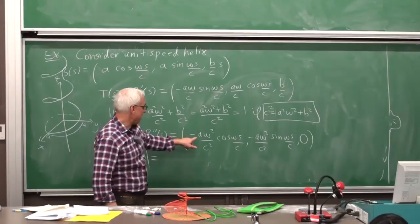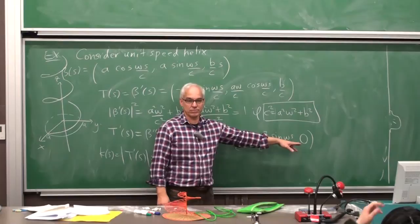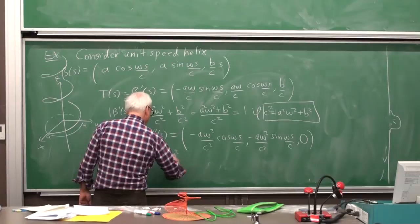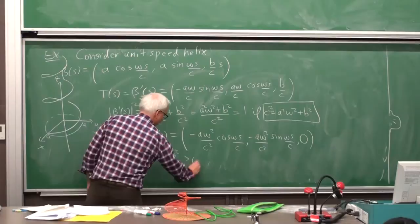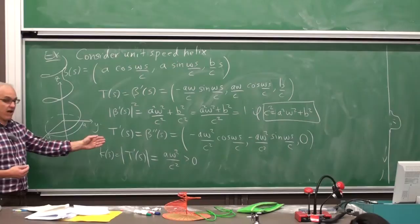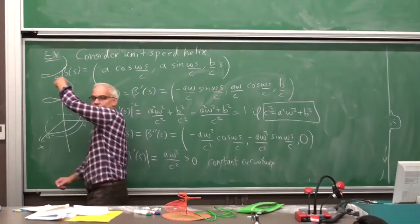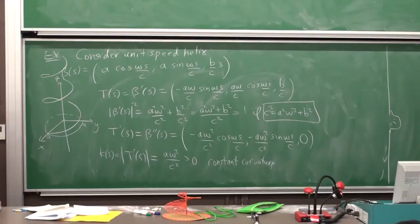And remember that the curvature is then defined as the size or the length of this acceleration. Okay, well, what's that going to be? Well, here we have minus A W squared C squared times essentially a cosine and a sine. So the length is really just this term here, the radius of this circle because the Z component now is zero. So the K of S is just A W squared over C squared. And that's always positive. We're assuming A is positive. So it's constant curvature, right? That's independent of S.